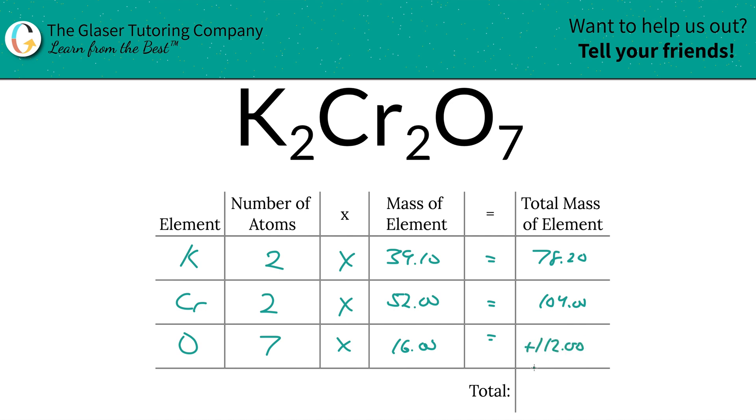Now, to find the total mass of the entire compound, all we simply got to do is add up this entire column together, right? So 294.20. And that is the molar mass of potassium dichromate. Units there are in grams per mole. That's all there is to it.